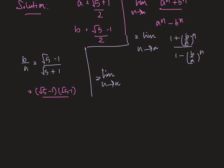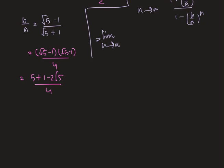In the denominator we get 5 minus 1 which is 4, and in the numerator we get 5 plus 1 minus 2 root 5 divided by 4, or 6 minus 2 root 5 divided by 4, which gives us 3 minus root 5 divided by 2.